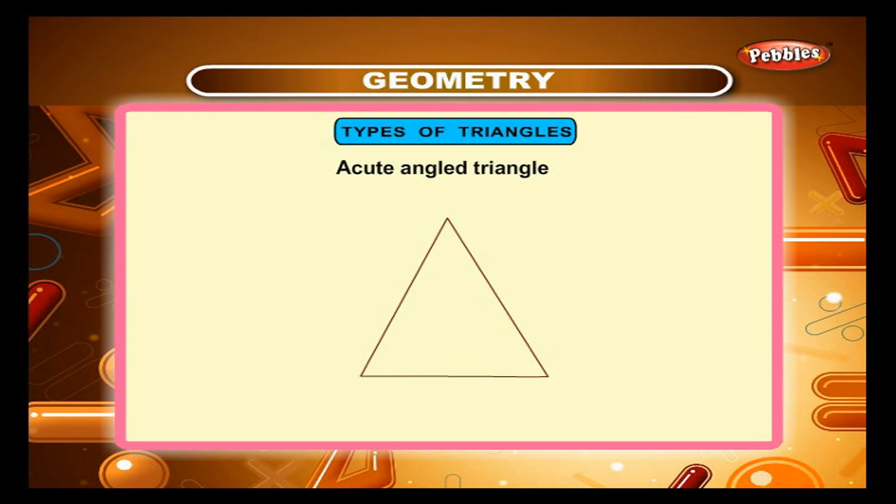A triangle with all three angles acute is called an acute angle triangle. In triangle EFG, angle FGE, angle FEG are all less than 90 degree.